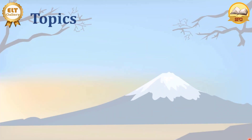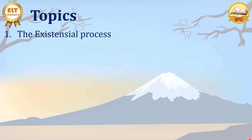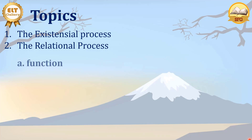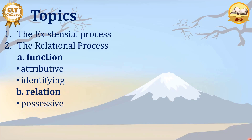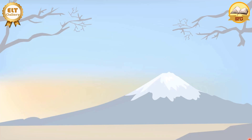In this video, we are going to talk about the existential process and the relational process. The relational process can probably be identified by the function in which we have the attributive and identifying and the relation of the participants. Here we have the possessive and intensive and circumstantial. But before we go on with the existential and relational process, let's review our previous processes.